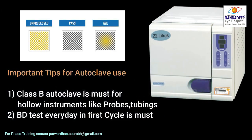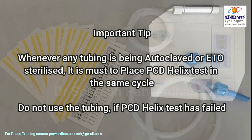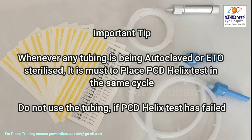A few things often missed: always use a class B autoclave with multiple pre-vacuum cycles for hollow instruments. The BD test must be done every day in the first cycle to confirm the equipment is functioning properly. Another important but frequently overlooked test is the PCD helix test, where a tube is placed with the indicator at one end alongside any tube you want to ETO or autoclave. Only if this test has passed should that tube be used.